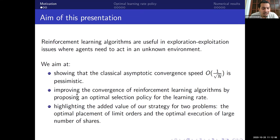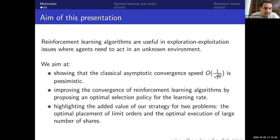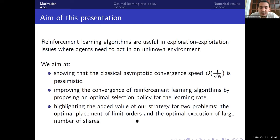Reinforcement learning algorithms are useful in an exploration-exploitation context, where agents need to know how to act optimally in a known environment, and interact with the environment in order to discover it. We aim to show that the classical one-over-square-root convergence rate is pessimistic. We focus on proposing a methodology that improves convergence by a good choice of the learning rate, and highlight its added value in two problems: optimal placement of limit orders and optimal execution of large numbers of shares.